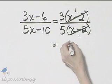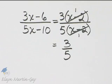So I have three times one over five times one or three fifths. This expression simplified is three fifths.